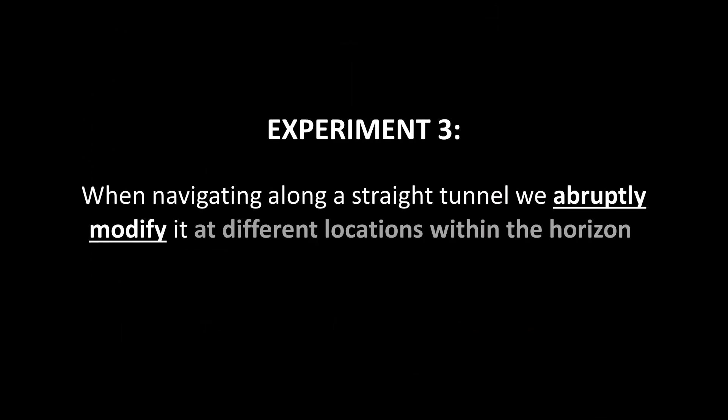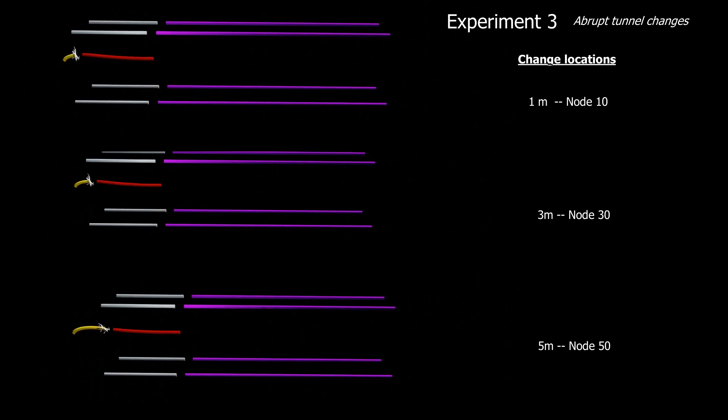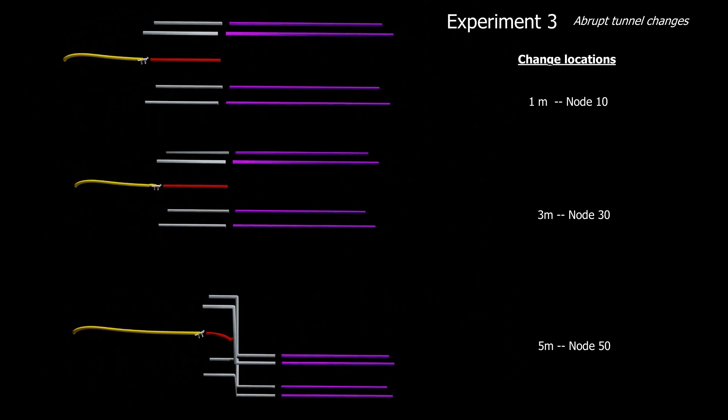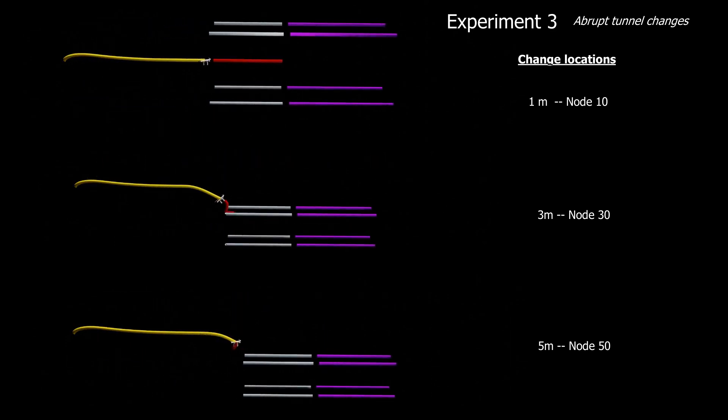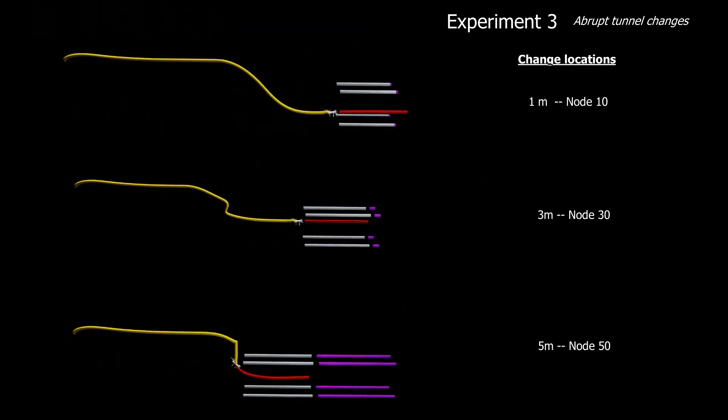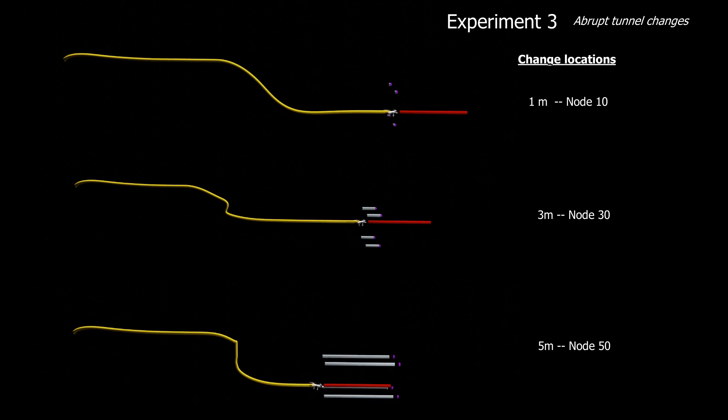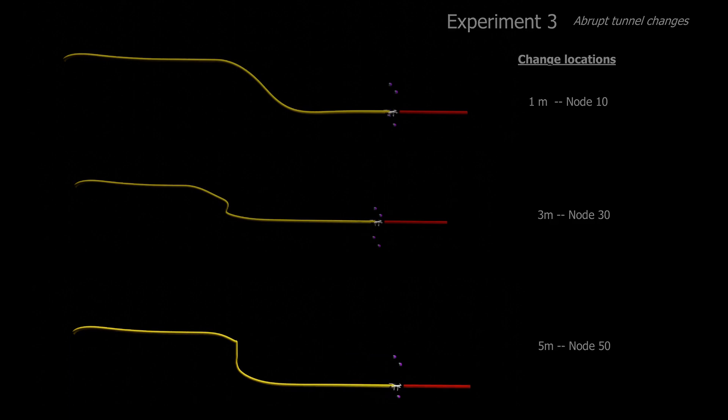Lastly, focusing on agile navigation within highly dynamic environments, we study the robustness of our approach when practically altering the tunnel at different locations along the horizon. While navigating at 5 meters per second, the tunnel is vertically displaced at 1 meter, 3 meters, and 5 meters from the quadrotor.